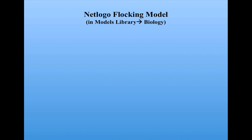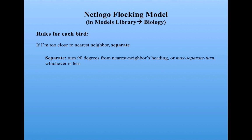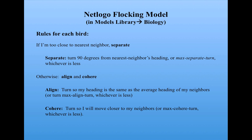We're going to look in a little more detail at a NetLogo version of this model, which is in the Models Library in the Biology section. We have a number of birds, and similar to the Boids model, each bird obeys the following rules. If a bird is too close to its nearest neighbor, it separates — turning up to 90 degrees away from the nearest neighbor's heading, up to some maximum value settable by the user. Otherwise, if not too close, it does two things: it aligns, turning to match the average heading of its neighbors, and it coheres, turning to move closer to its neighbors.